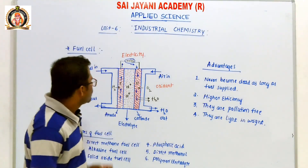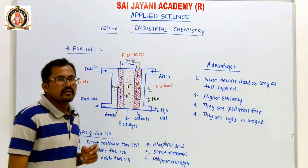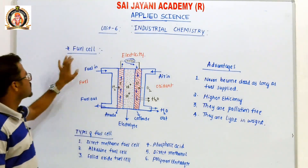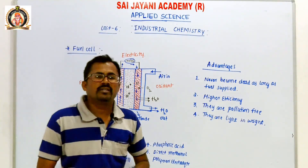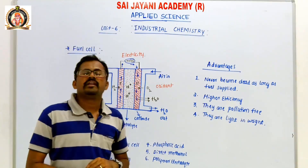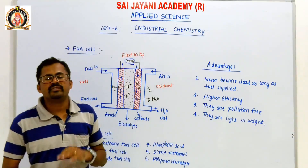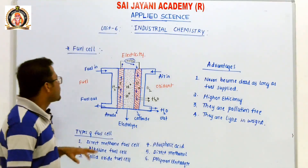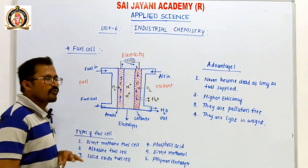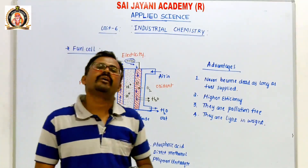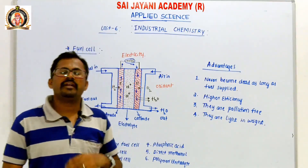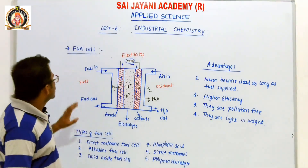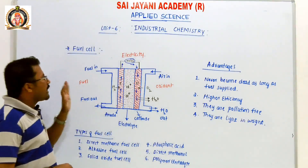Next concept: fuel cell. This is industrial chemistry concept number six. A fuel cell is a device which converts chemical energy into electrical energy. The chemical energy of fuel is first converted into heat energy, then heat energy is converted into electrical energy.